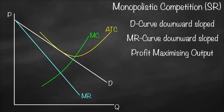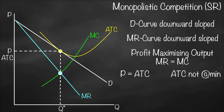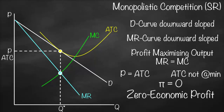The profit-maximizing condition is marginal revenue equals marginal cost. From their intersection, we go down to find Q*, then up to the demand curve and move horizontally to get the price. In this example, price and average total cost are tangent at the profit-maximizing quantity Q*, meaning price equals average total cost. Average total cost is not at its minimum, and consequently economic profit equals zero — we have zero economic profit.